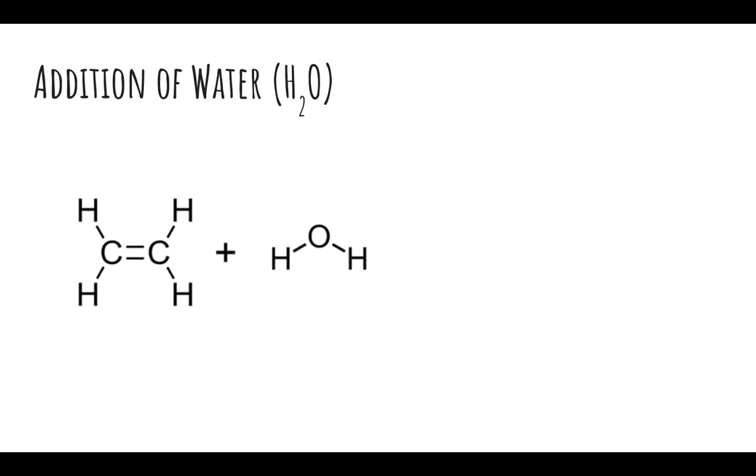The last example for alkenes is the addition of water. This one is a little different because we have three atoms in the molecule we're adding. The double bond breaks, and then one of the bonds in water breaks. A hydrogen is added to one carbon, and an OH group is added to the other carbon. You'll notice the OH was put on the end, but you can technically put it in any position. We formed an alcohol here, which we'll discuss in another lesson.